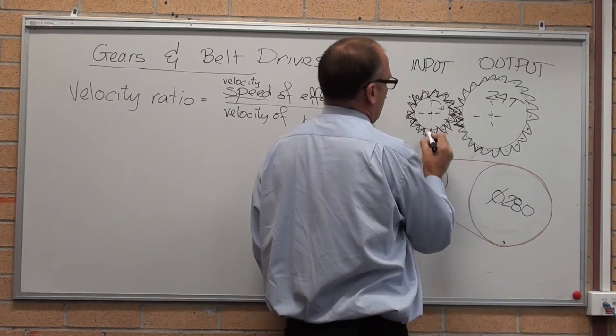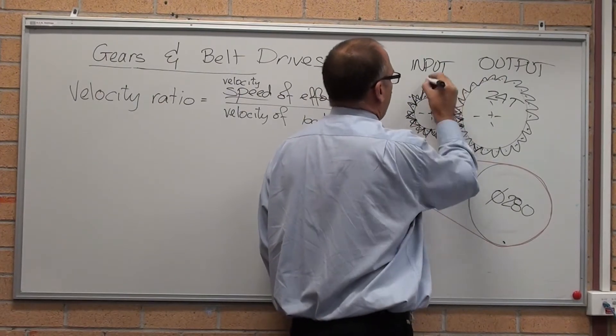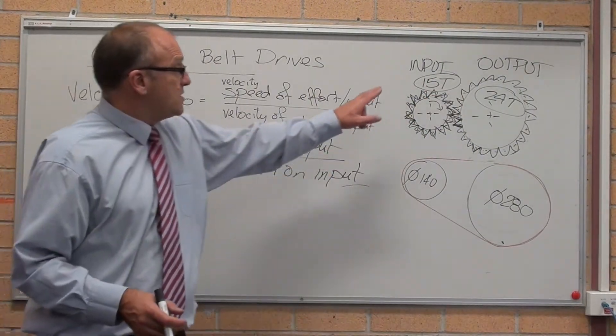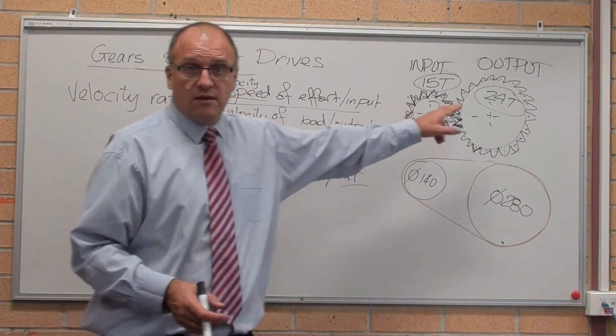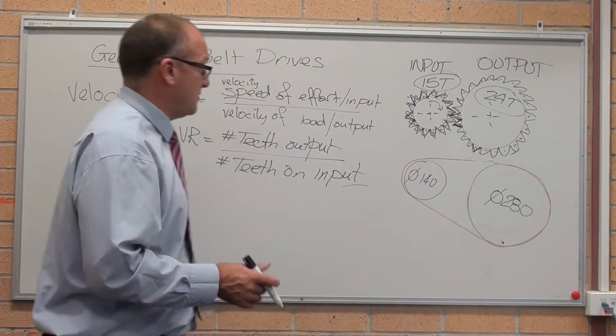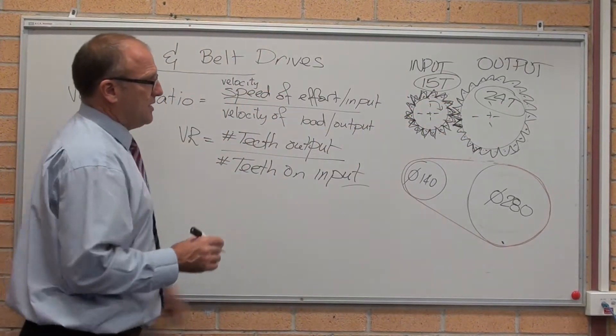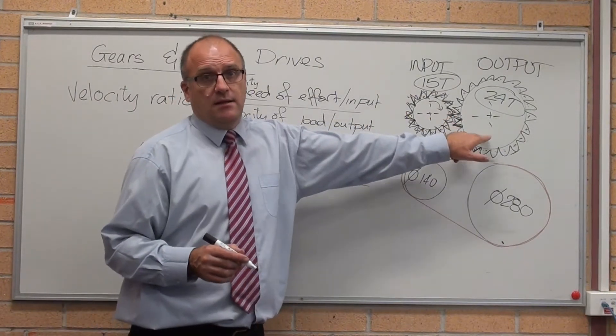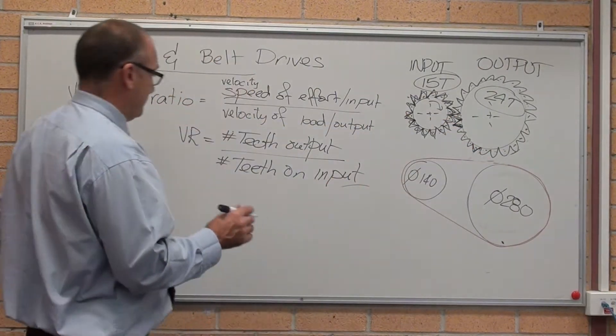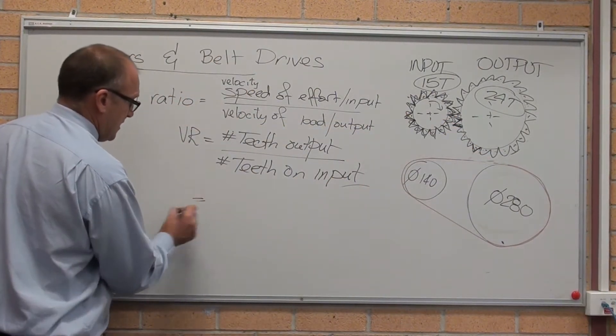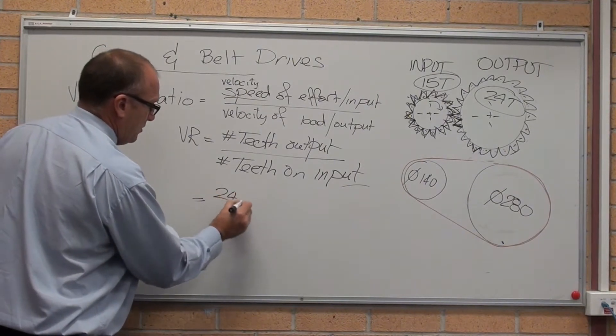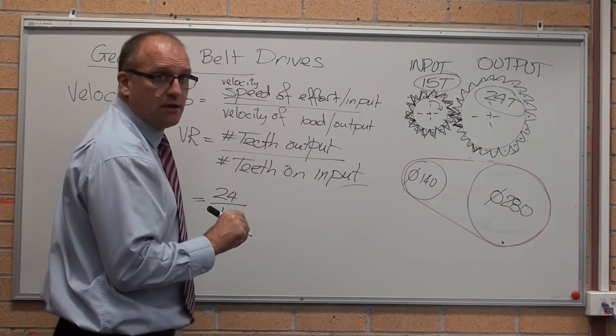Over here. Velocity ratio is speed of the input divided by speed of the output. The input is spinning faster than the output.